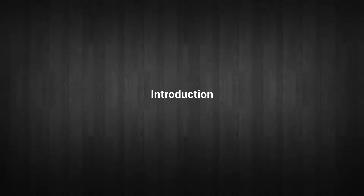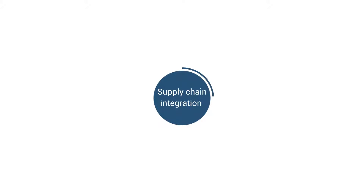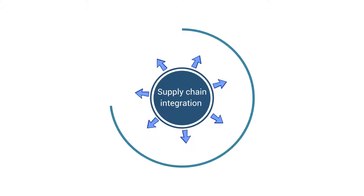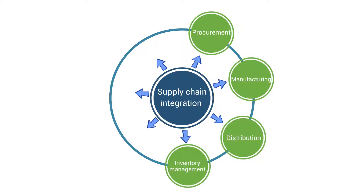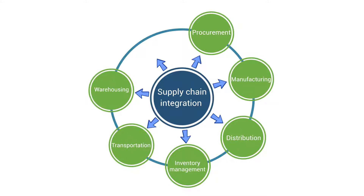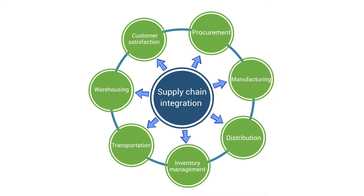Supply chain integration is the process of coordinating various activities across the supply chain, which includes procurement, manufacturing, distribution, inventory management, transportation, warehousing and customer satisfaction, from the raw material stage to the finished goods stage and to the end customers.